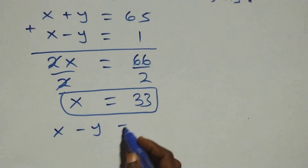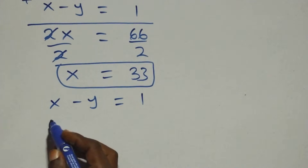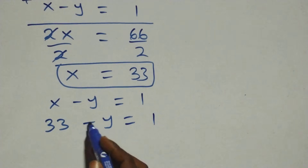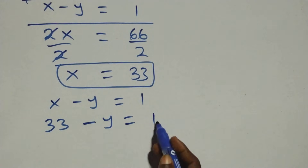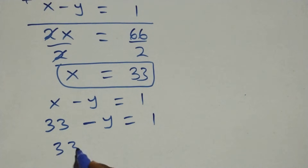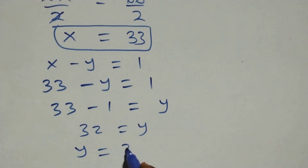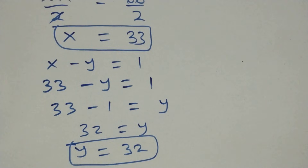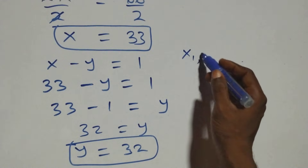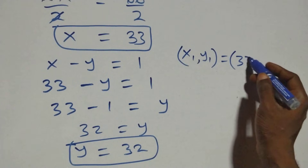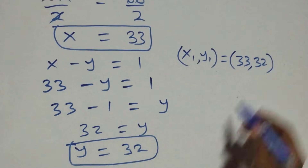We solve for y using the second equation x minus y equals 1. Substituting x equals 33: 33 minus y equals 1. Rearranging, y equals 33 minus 1, which is 32. So y equals 32.